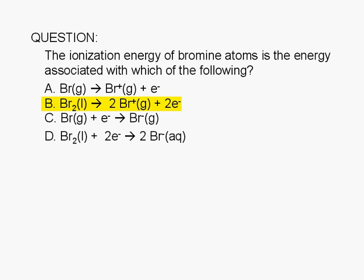B: Diatomic bromine molecule in the liquid phase yields two bromine positive one ions in the gas phase plus two electrons.